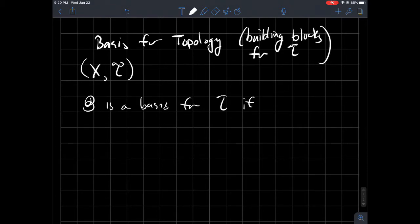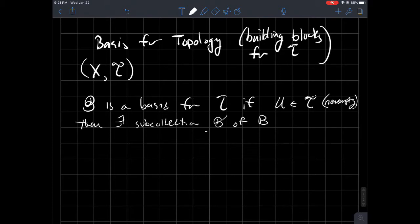If you took anything that's open, in other words any element of T, say non-empty, any non-empty element of T, what should we be able to do? We should be able to find some things from B. So then there exists some sub-collection, I'll call it fancy B' of B. So we should be able to pick a few things out of what your basis is, such that the union of those things that are in B' gives you U. Such that U is equal to the union of regular B such that regular B was a part of the handful of things that you picked out of your basis.